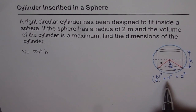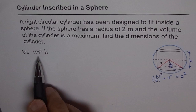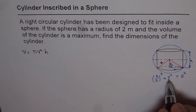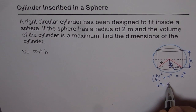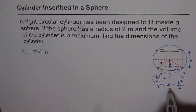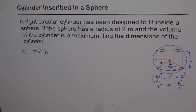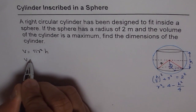So now we have a relation, and from here we can find what r² is in terms of height. It is better to find r² from here. We get r² = 4 − h²/4. So that is the value of r². We will substitute this value in our equation for volume and then find the rate of change of volume.